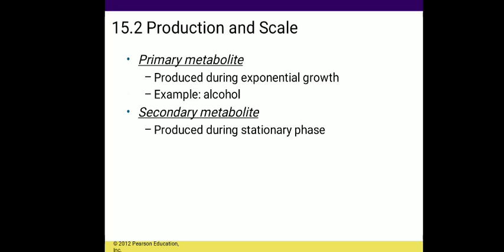Primary metabolites are the products which are produced during the exponential growth phase, while secondary metabolites are products produced during the stationary phase. We won't go into more detail regarding primary and secondary metabolites here.